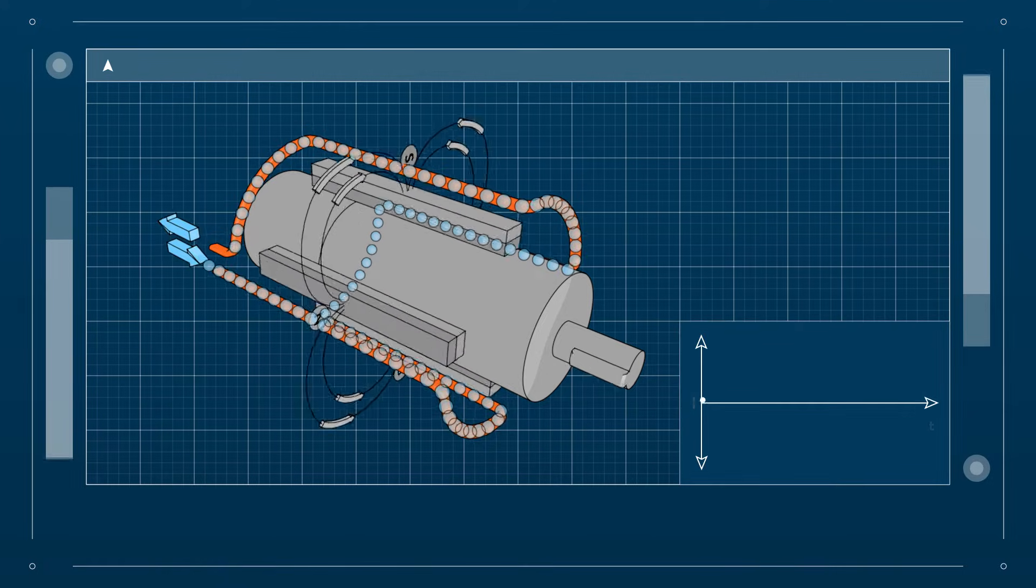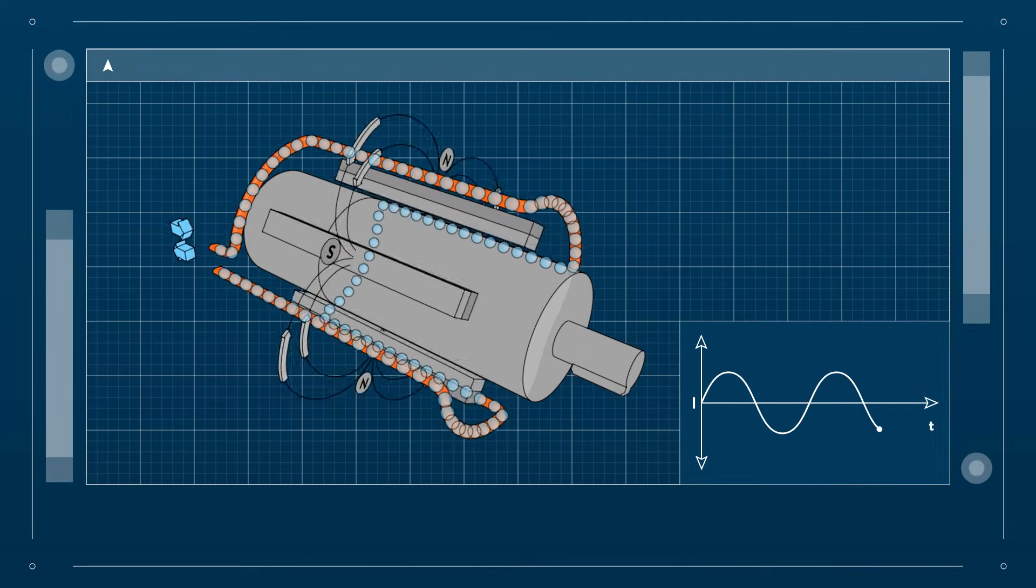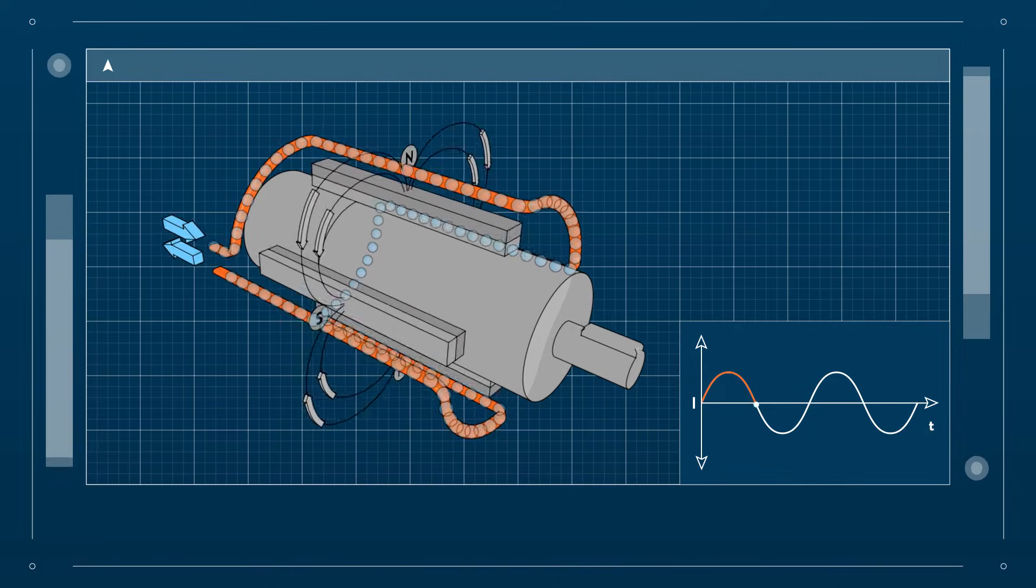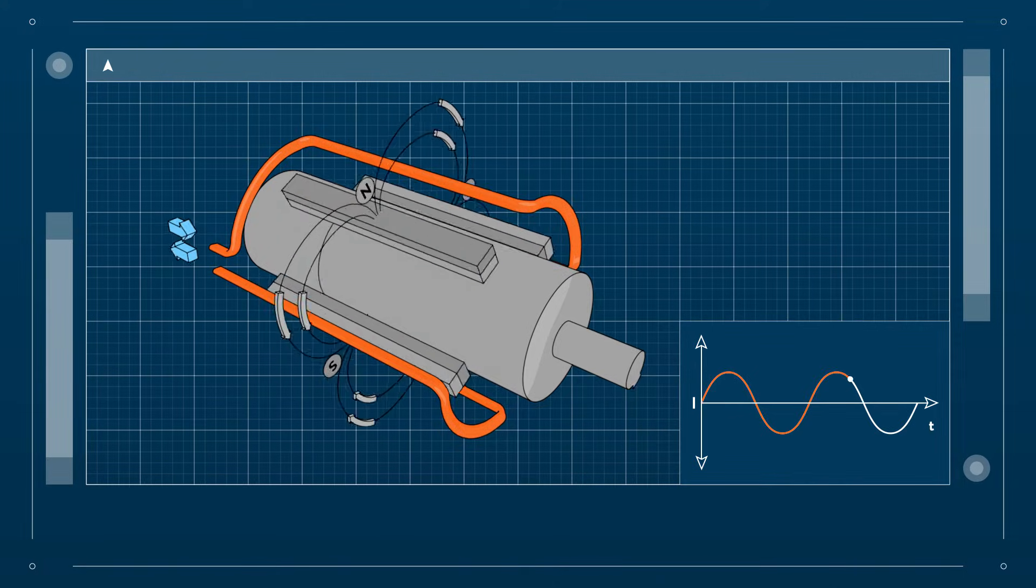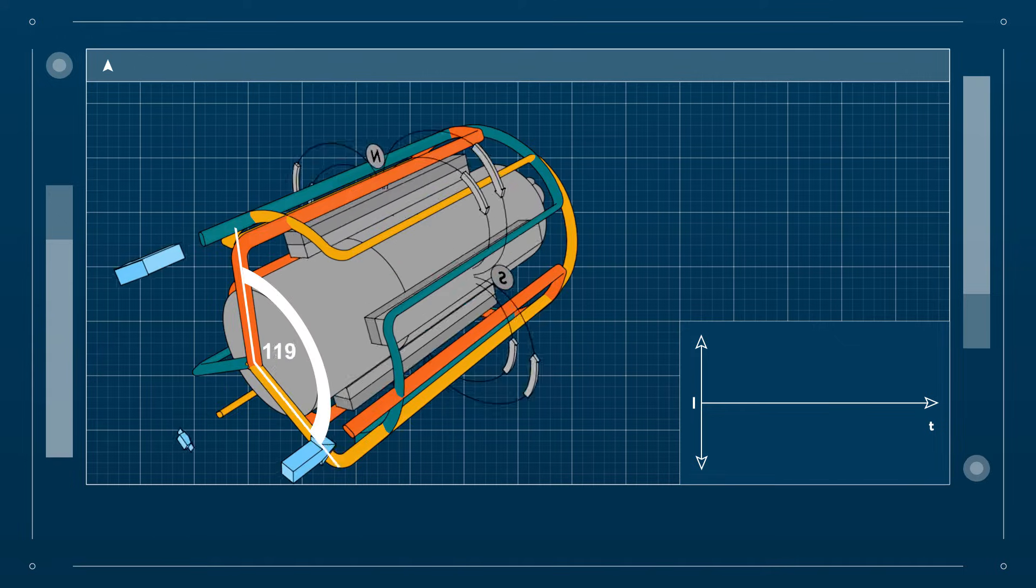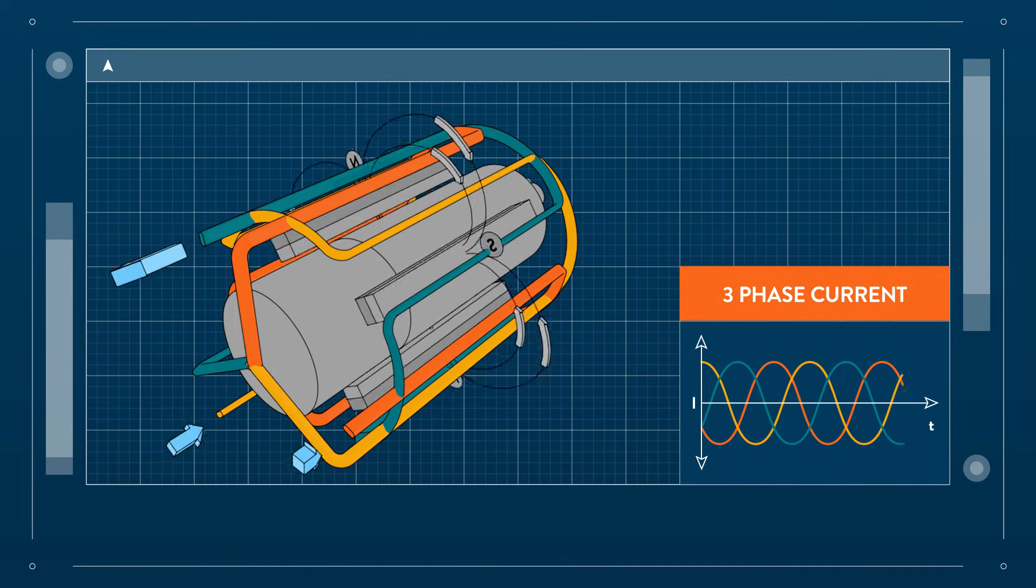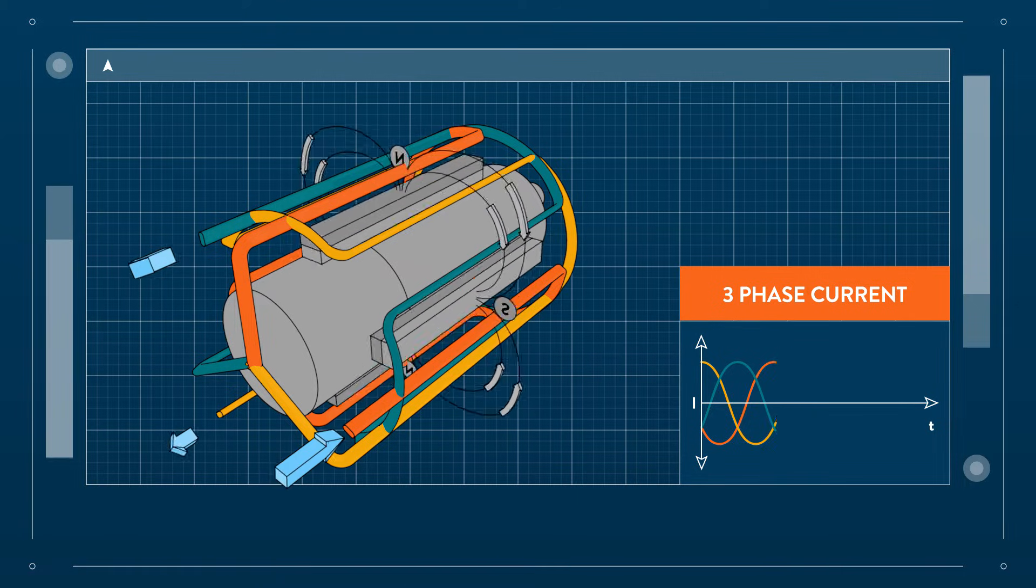The displacement of the electrons during a rotation can be plotted in a graph. This creates a sine wave pattern, hence the name alternating current. By adding two more armature coils on a 120 degree angle, a three-phase current can be generated. This is generally used for transporting electric power.